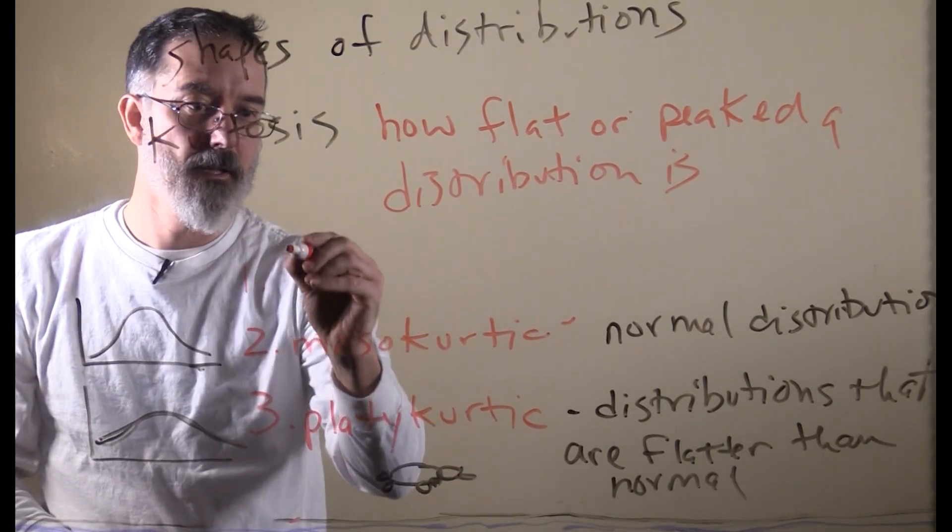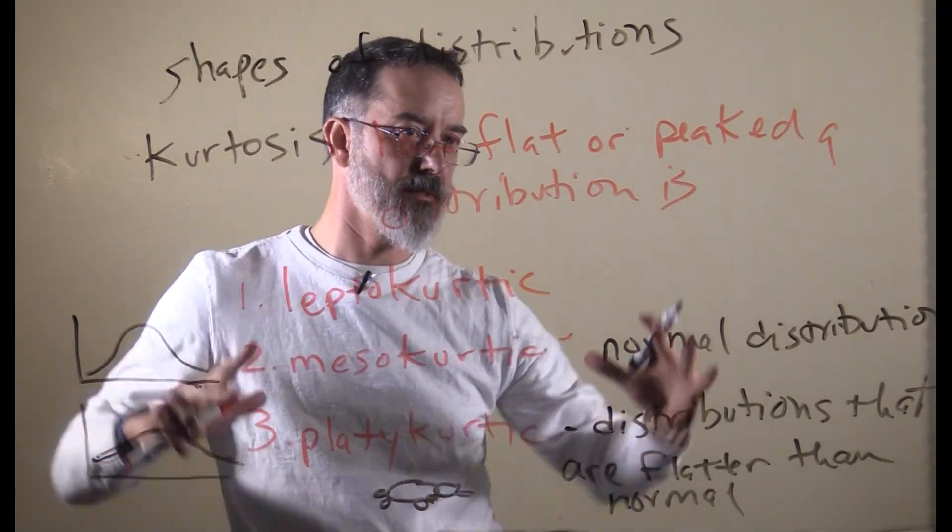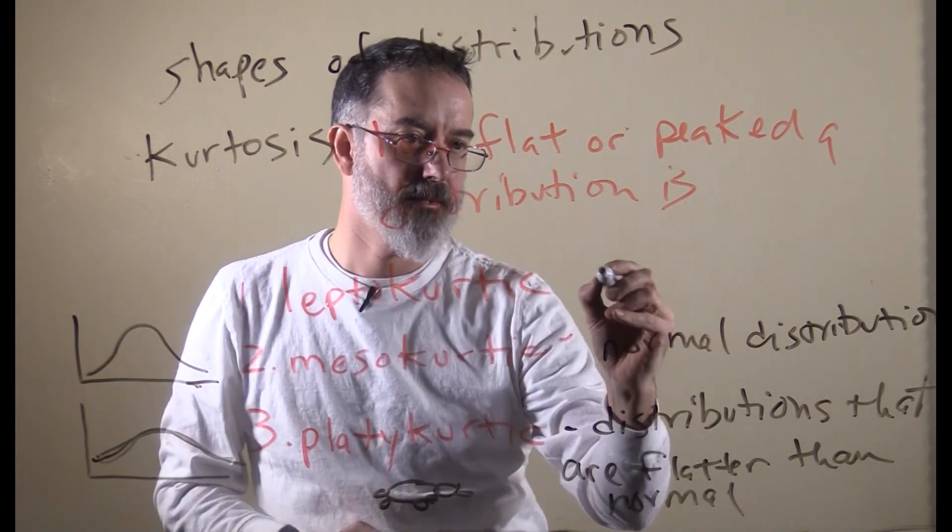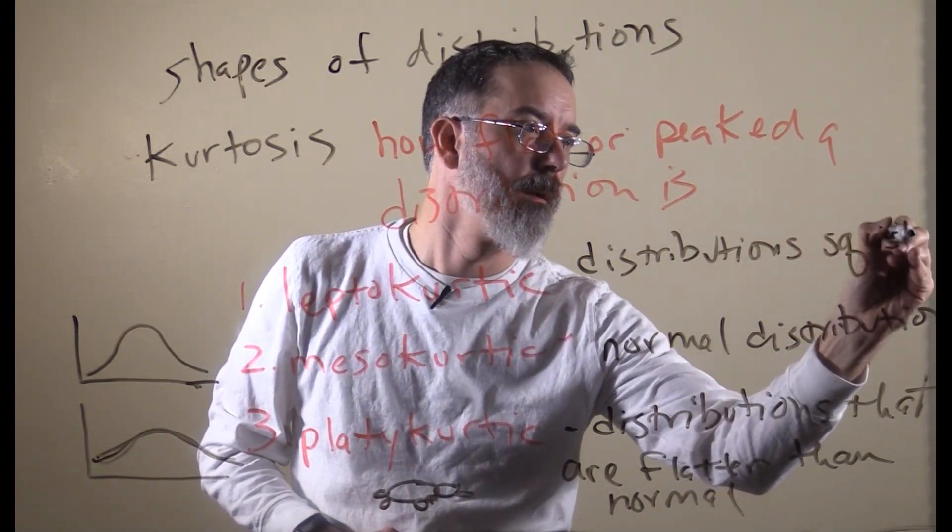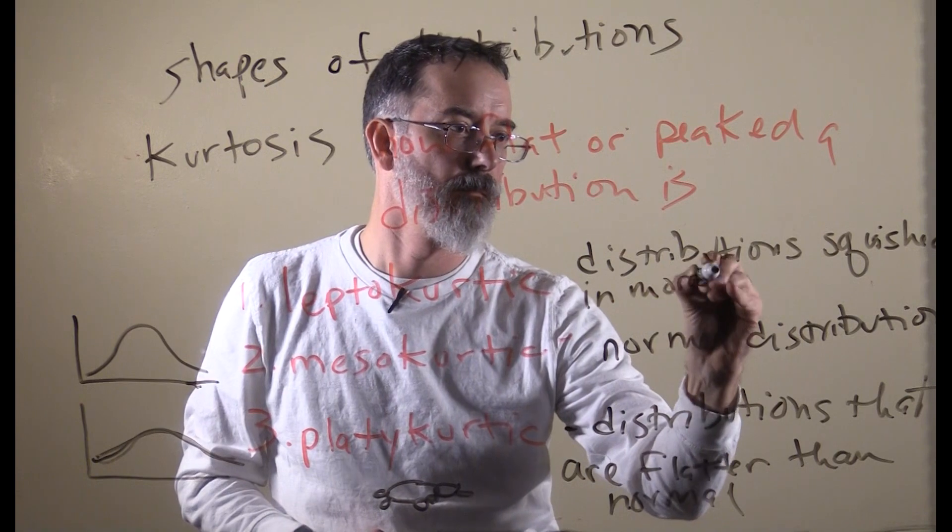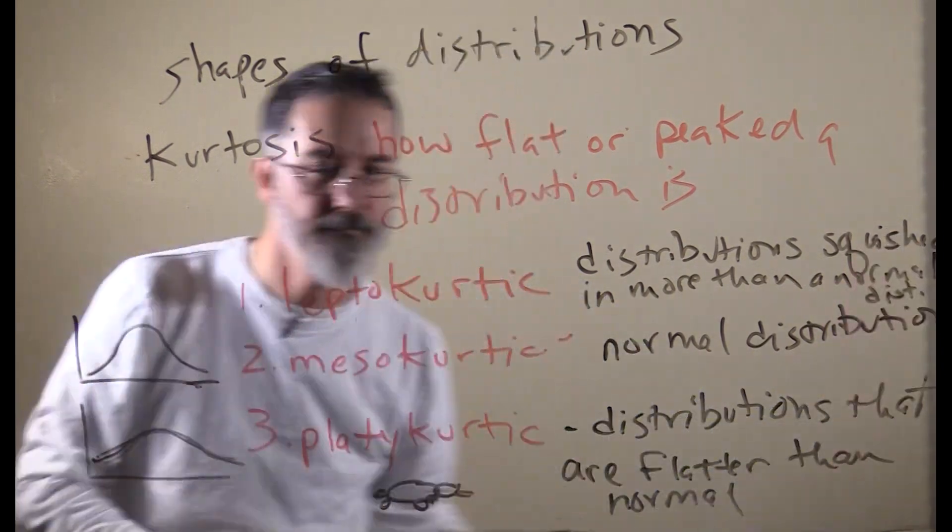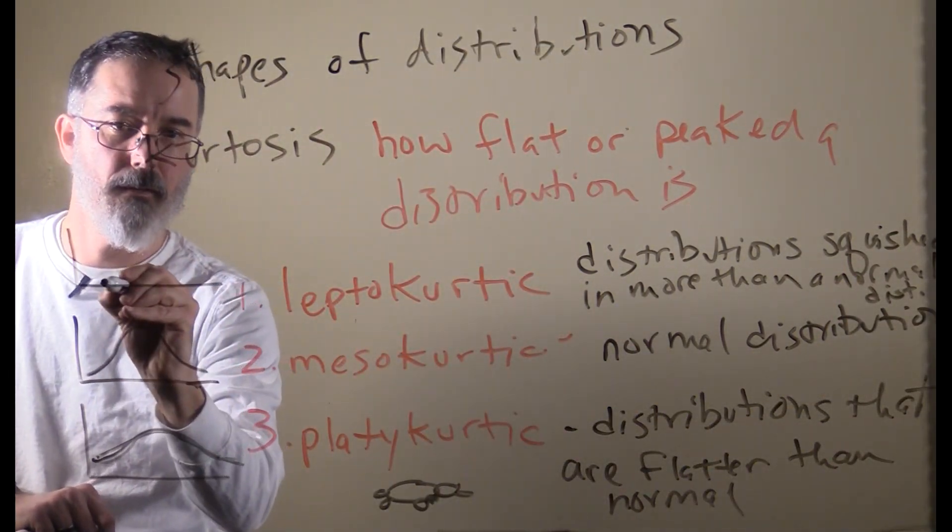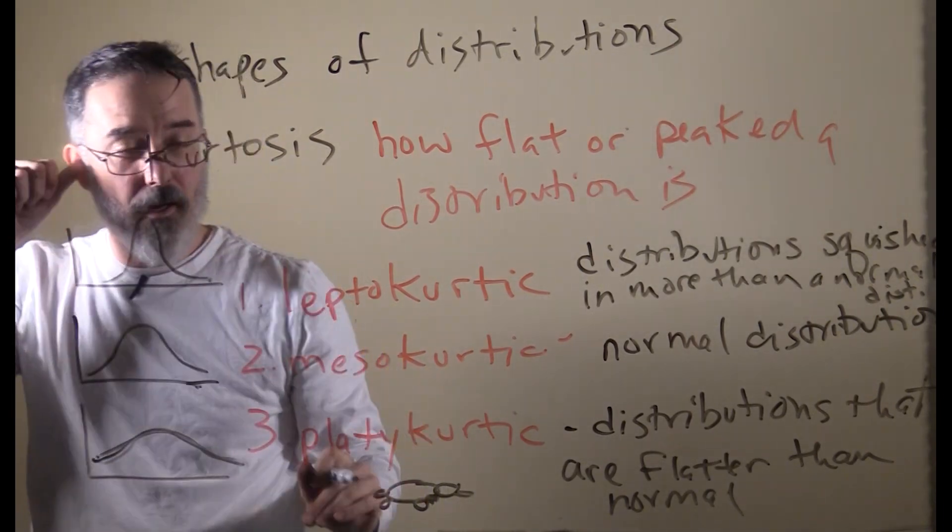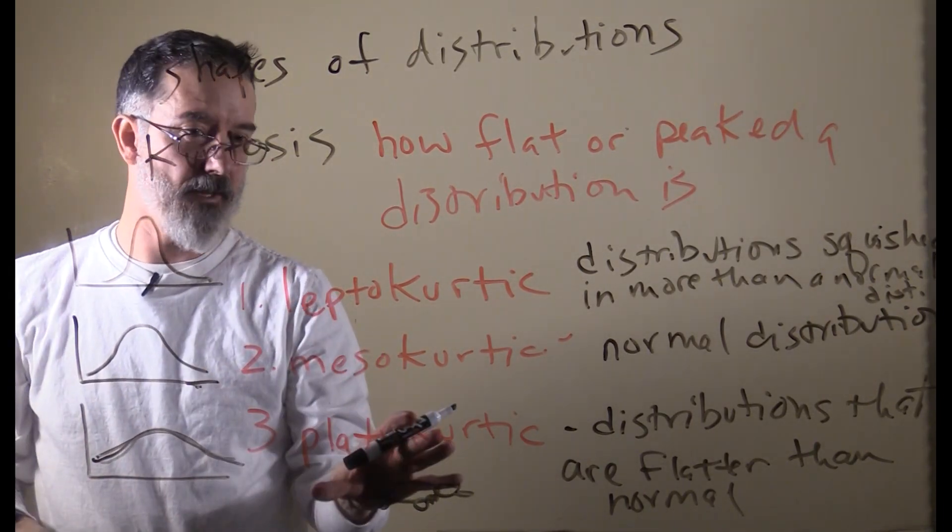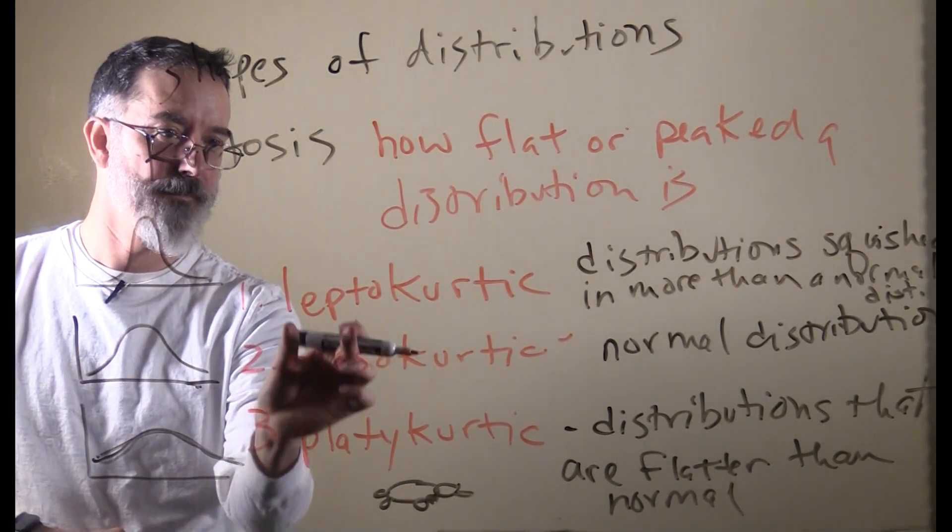The last kind of kurtosis is called leptokurtic, and this is distributions that are more squished in than a normal distribution. It might look something like that. It is almost like you took a normal distribution and squished it in, it got taller. The only advice I have for remembering that is it is not platykurtic, it is not mesokurtic, so it is not the flatter one, it is not the middle one, it is the other one, and that is the skinny one.